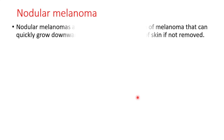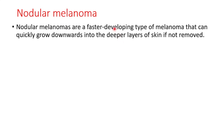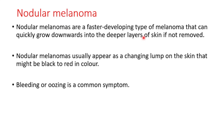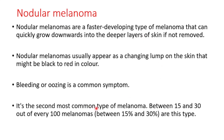The second type is nodular melanoma. These are a faster-developing type of melanoma that can quickly grow downwards into deeper layers of skin if not removed. They usually appear as a changing lump on the skin that might be black to red in color. Bleeding or oozing is a common symptom. Between 15 to 30 percent of all melanomas are this type.